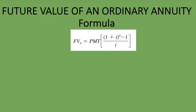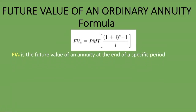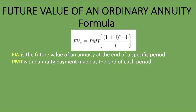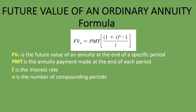So what is the formula for the future value of an ordinary annuity? Here it is. I'm going to quickly go through it since we covered it in detail in our first lesson. The future value of an ordinary annuity (FVN) equals PMT times [(1 + i)^N − 1] divided by i. FVN is the future value at the end of a specific period, PMT is the annuity payment made at the end of each period, i is the interest rate, and N is the number of compounding periods.